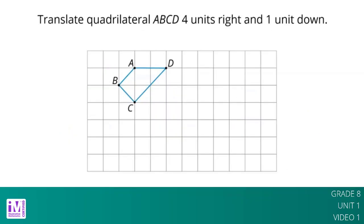When a figure is on a grid, we can use the grid to describe a transformation. Here, we can use the grid to say quadrilateral ABCD was translated four units to the right and one unit down.